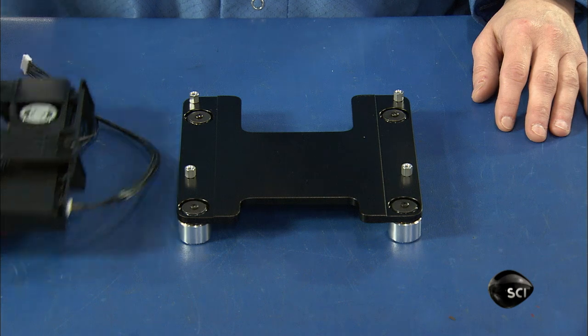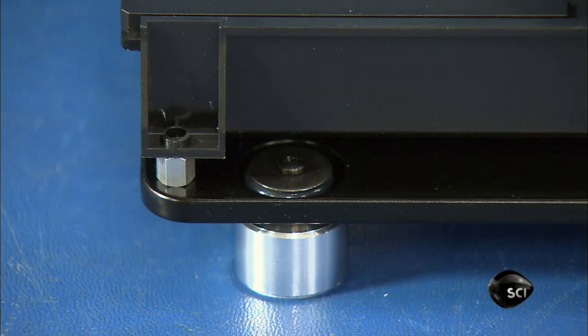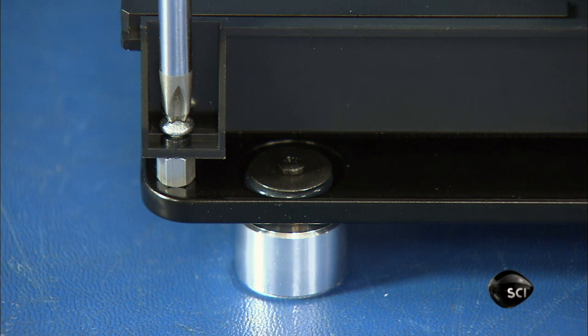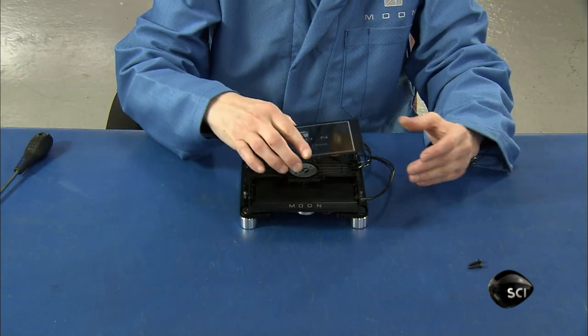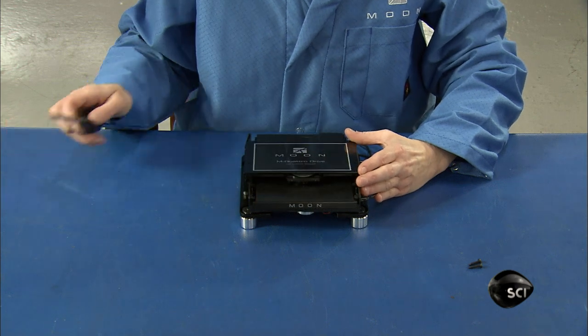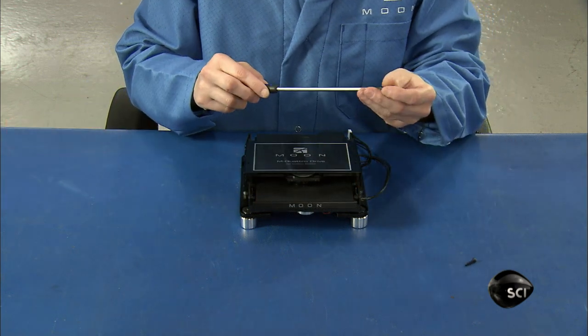Next, workers install the CD drive onto the support base. They install the drive's protective cover. It prevents dust from getting into the CD optical reader.